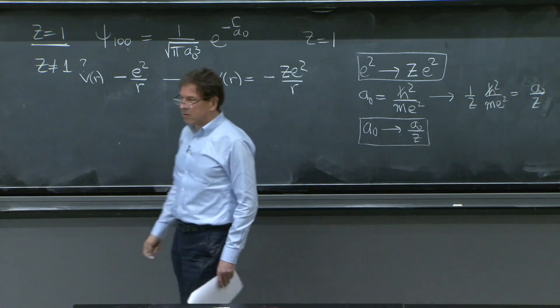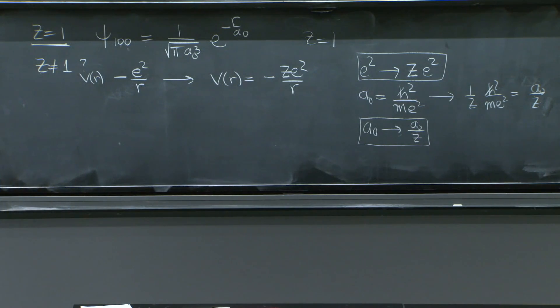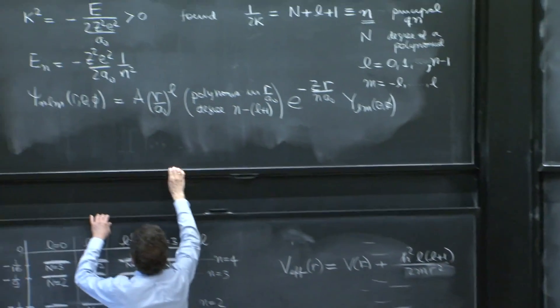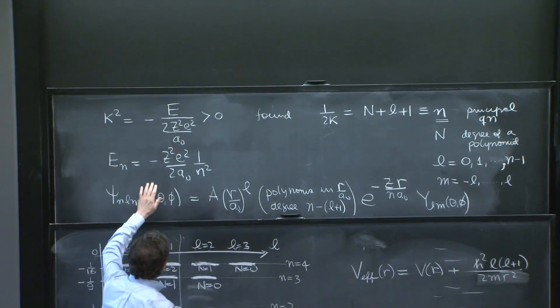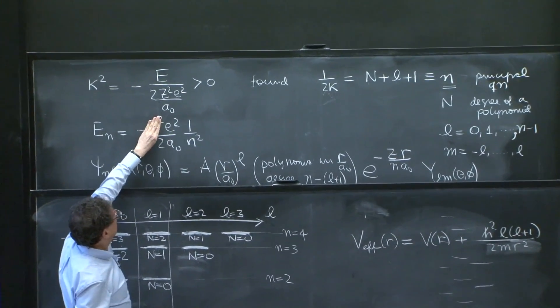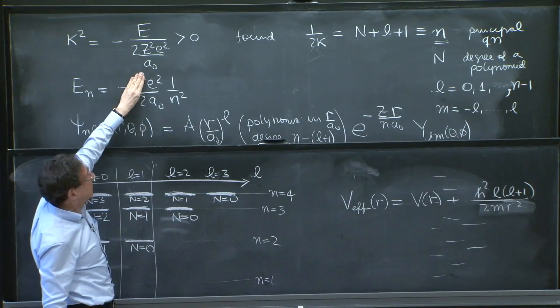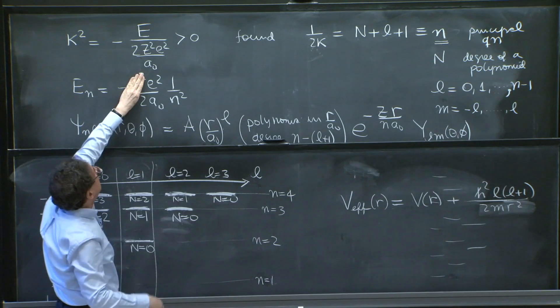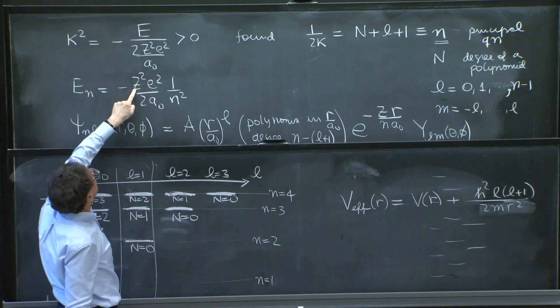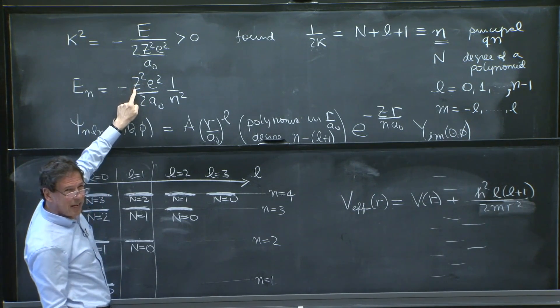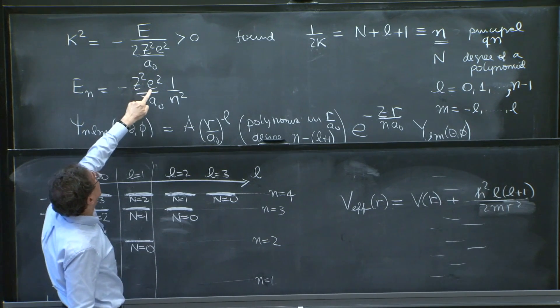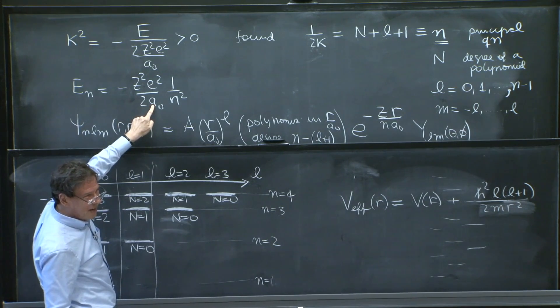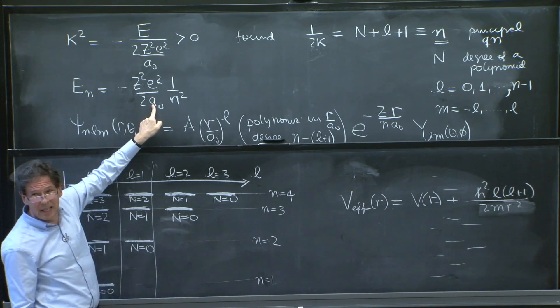One is implicit on the other. But many times you write the formula in a mixed way. Look at that energy. If you would have looked at this without the z and you would have said, oh, e squared is replaced by z e squared, you would have put a single z. But there's a z squared here. And it comes because one z is here. And the other z is in the a naught.